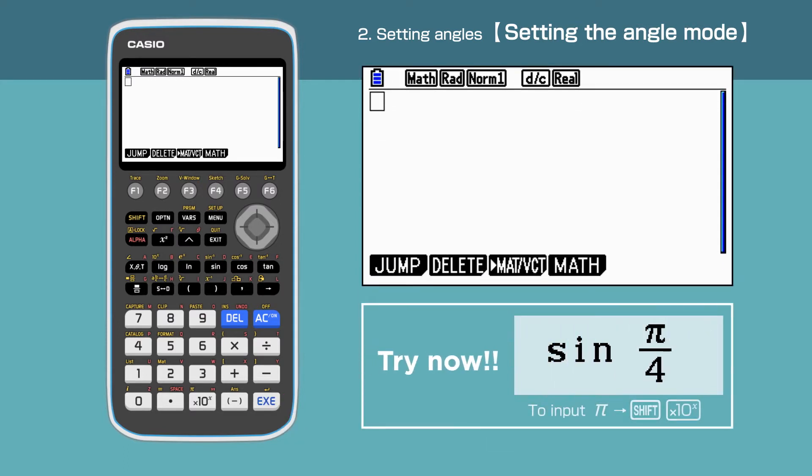First, let's calculate the sine of pi over 4. Press Execute to obtain the answer. The answer is root 2 over 2.